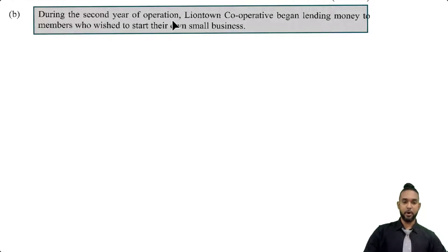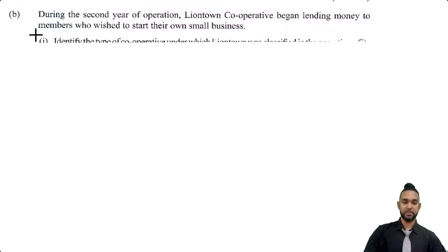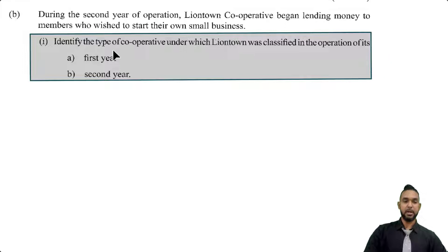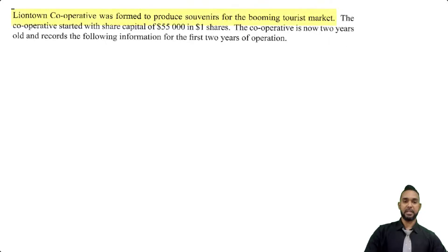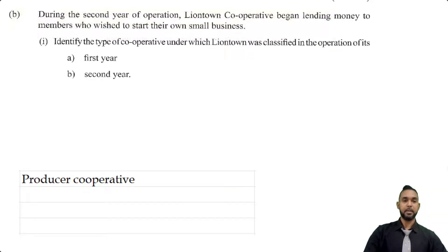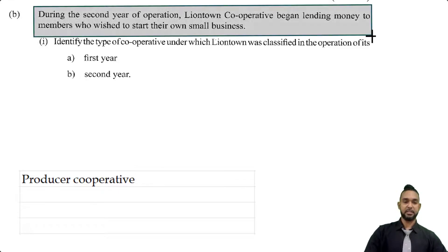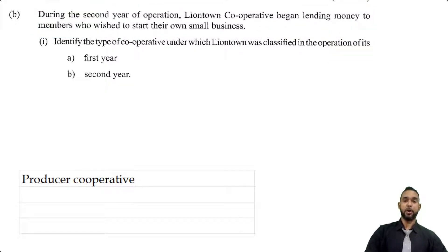During the second year of operation, Liontown Cooperative began lending money to members who wished to start their own small businesses. They're asking us to identify the type of cooperative for each year. In the first year, it was formed to produce souvenirs, so it was a production or producer cooperative. In the second year, since Liontown began lending money to members, that makes it like a credit union or financial cooperative.